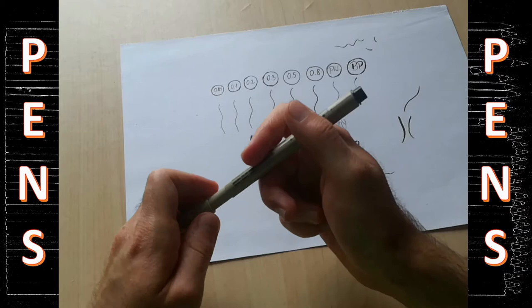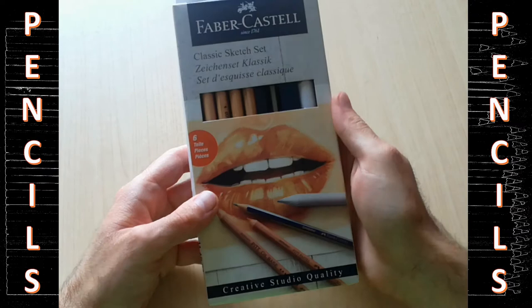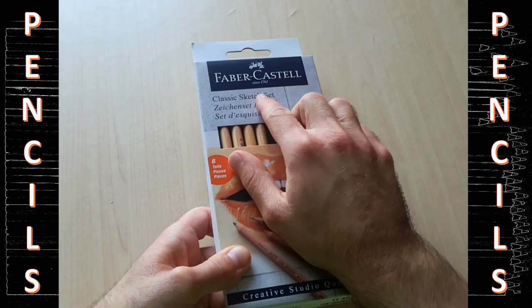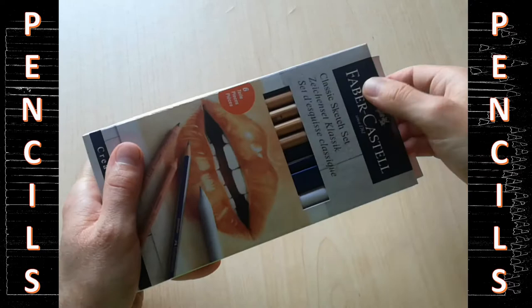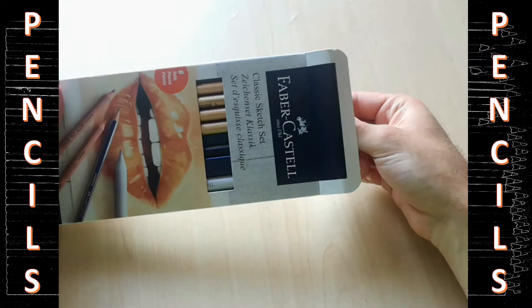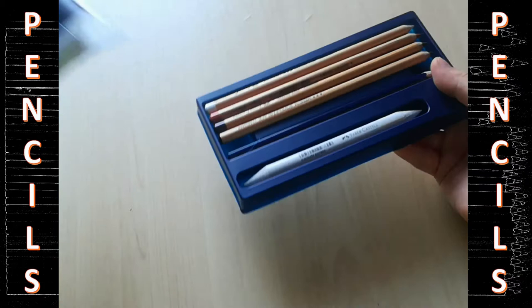Next, we have some Faber-Castell products. First of all, we have the Faber-Castell classic sketch set. It contains a Faber-Castell graphite pencil, 3 Pitt pastel pencils, white, sanguine and walnut brown, and the paper blender.